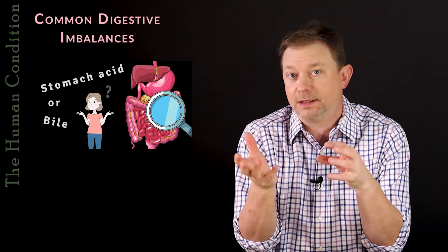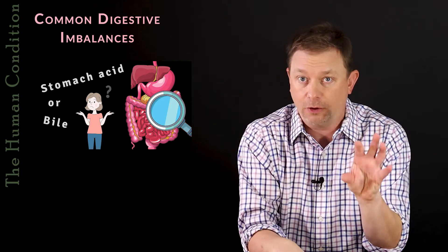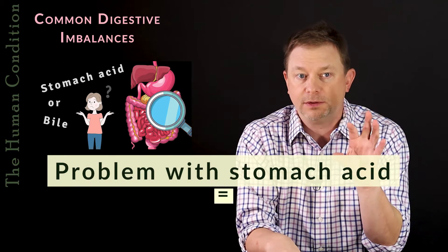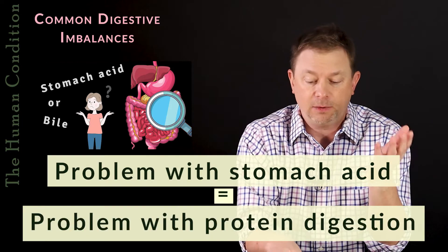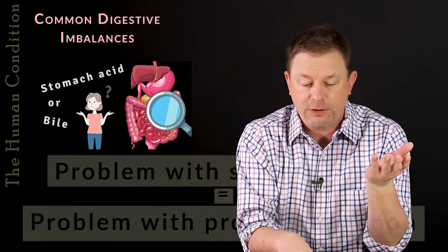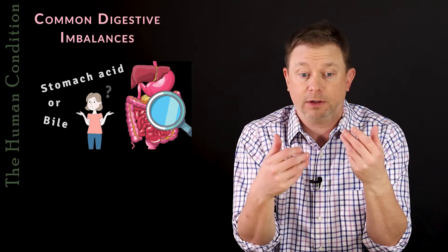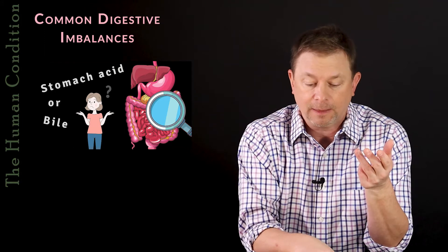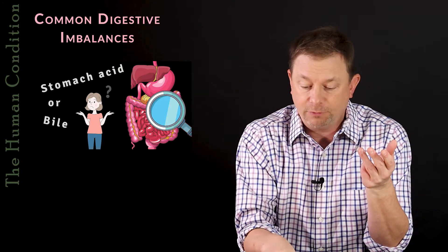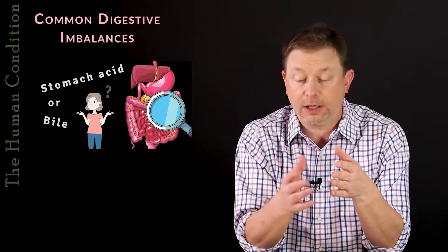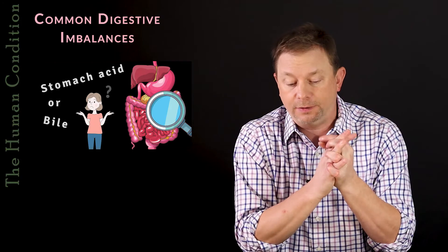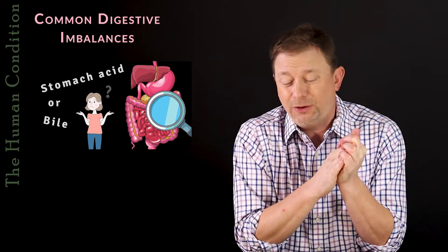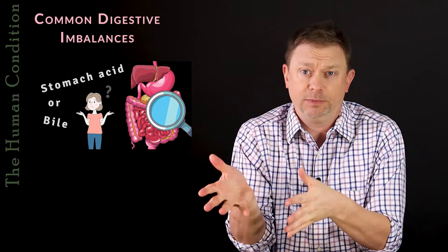If this process doesn't happen correctly from the stomach acid side, a person doesn't digest their protein. When you don't digest your protein, you end up with real problems involving changes in stool, changes in gas, and changes in distension. A bile problem is a different kind of problem — one that doesn't really begin until after the stomach. A bile problem usually begins after the stomach empties.